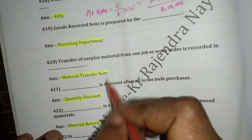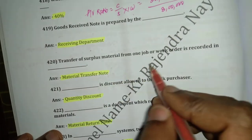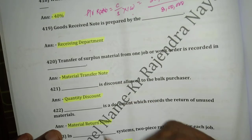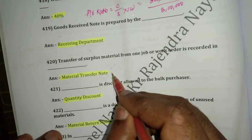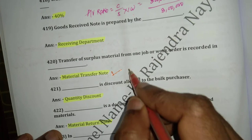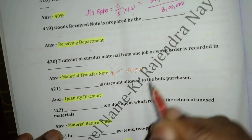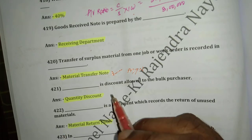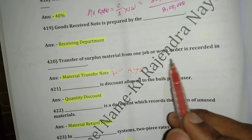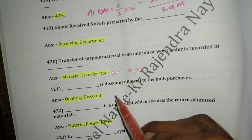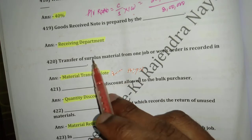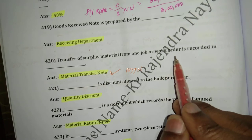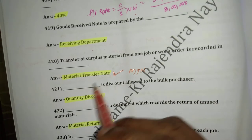Question number 420: Transfer of surplus material from one job or work order to another is recorded in a Material Transfer Note (MTN). MTN — Material Transfer Note — is the document used to record such transfers.